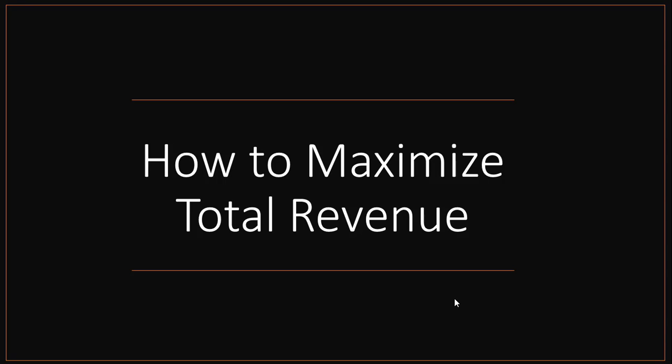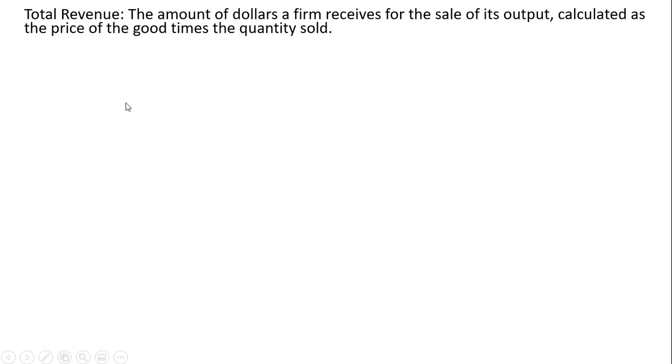Hello, in this video we're going to solve several problems where we maximize total revenue. Total revenue is the amount of dollars a firm receives from the sale of its output, calculated as the price of the good times the quantity sold.